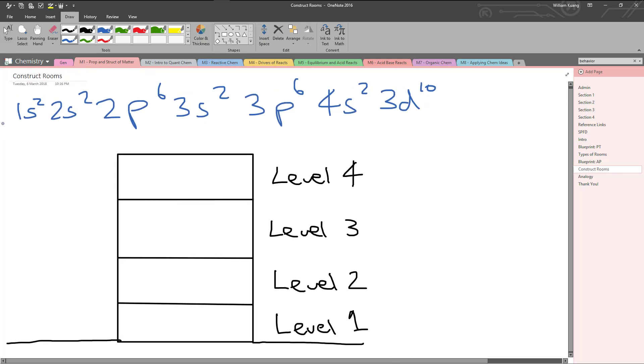Now what does this all mean? Remember, the number on the outside, the big number, means the level. So level 1, we have an S2 here. Level 2, we have S2. Level 2, we have a P6. Level 3, we have S2. Level 3, we have P6. Level 4, we have S2. And level 3, we have D10.